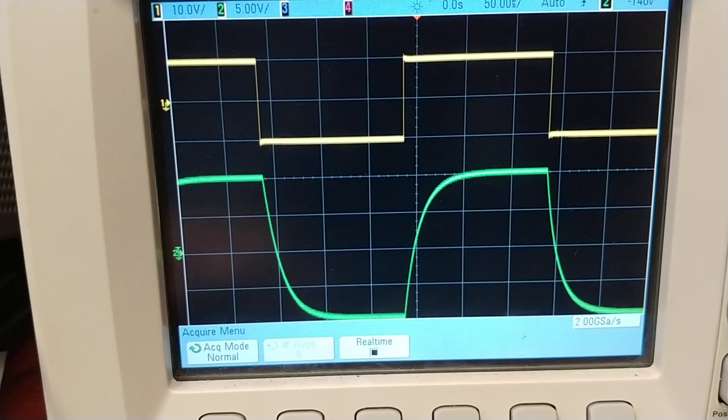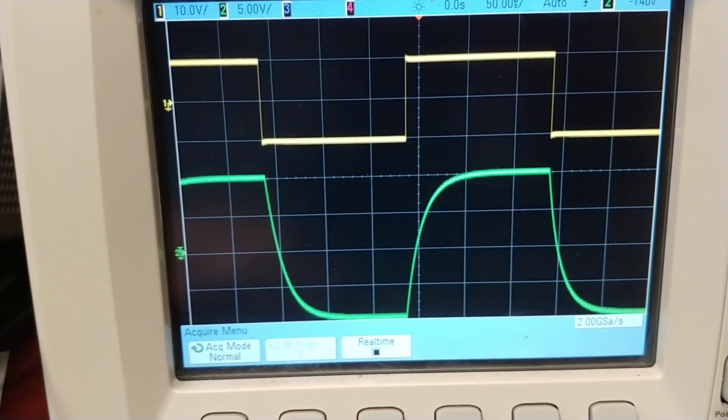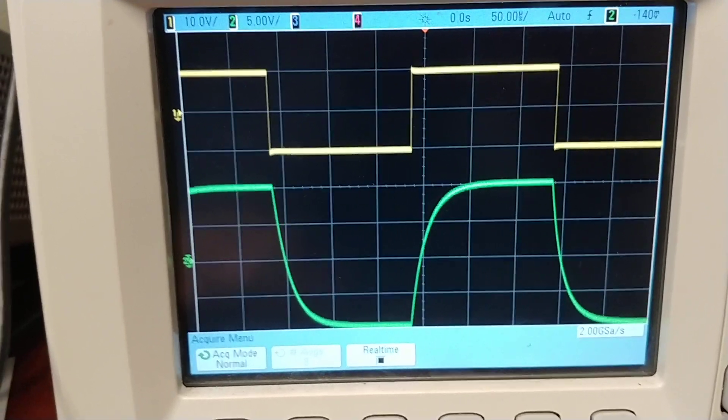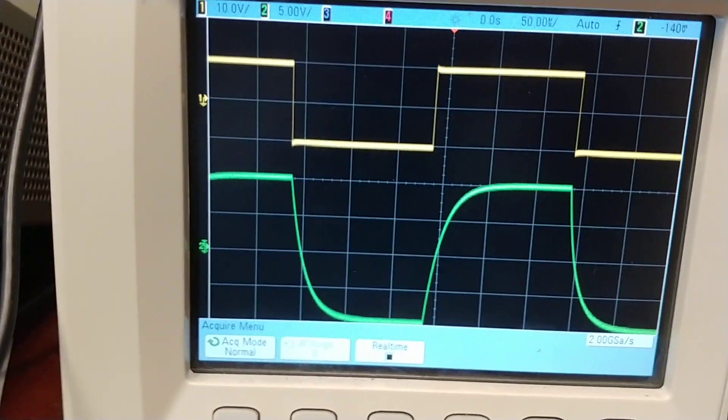We can see that the yellow channel is a step and the green channel is the output, and we can see that exponential approach.